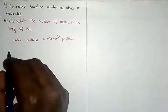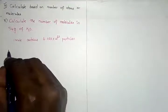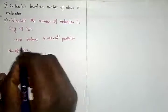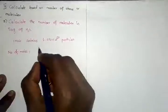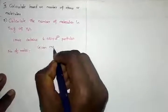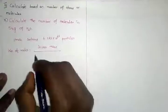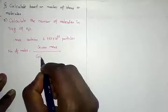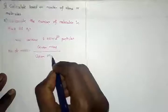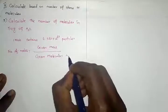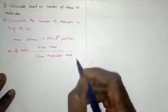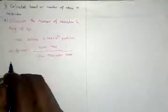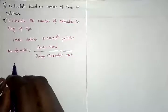What is the formula for number of moles? The number of moles equals given mass divided by gram molecular mass — because water is a molecule, we use gram molecular mass. This is step number one, formula number one, which we should know for this calculation.